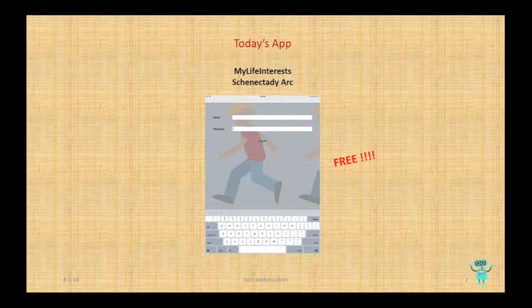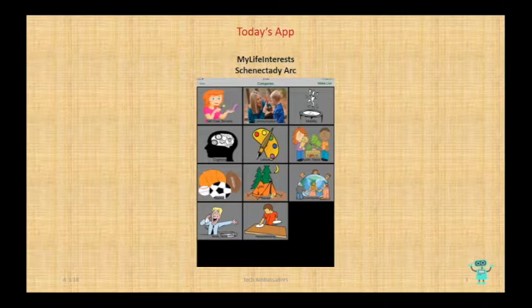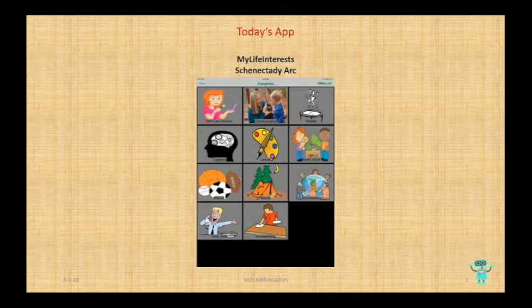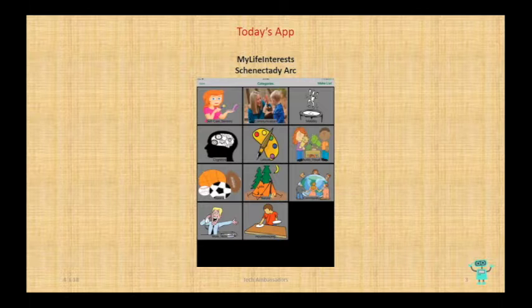It's available on the App Store, so take advantage of it because it's a neat little program. When you open it up, you just put in your name and create a password — nothing fancy. You'll come across various general categories: mobility, cognition, leisure, and all these different major categories. When you look at it, you first go up here and say 'I'd like to make a list.' Think of yourself as a care coordinator talking to a person you serve, or somebody in a day program, trying to get to know somebody a little bit better.